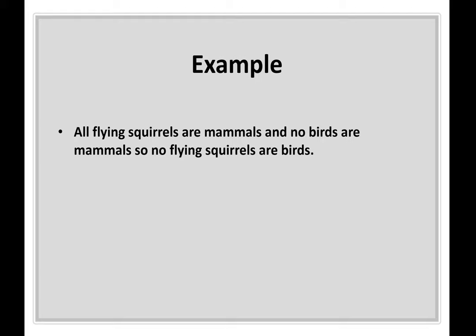All flying squirrels are mammals and no birds are mammals, so no flying squirrels are birds. 'So' is a conclusion indicator — this is your conclusion. That makes 'birds' your major term and 'flying squirrels' your minor term. That makes 'no birds are mammals' your major premise and 'all flying squirrels are mammals' your minor premise.